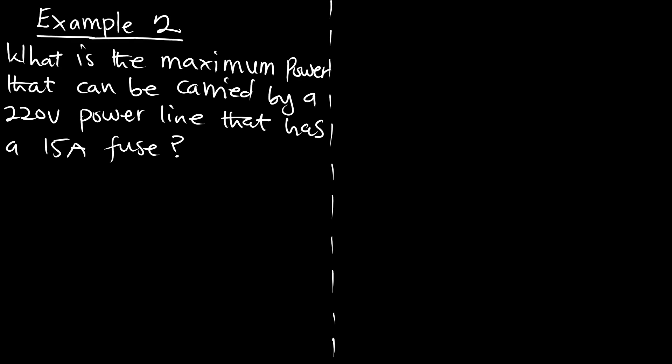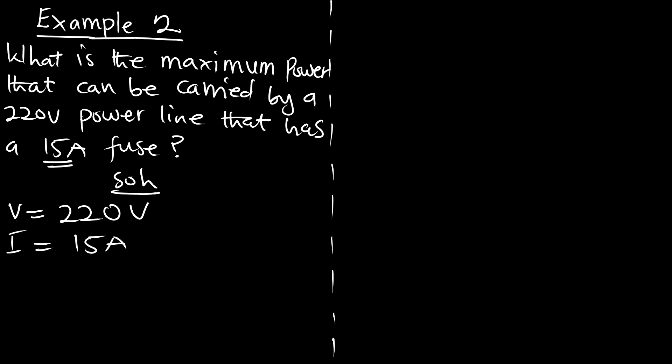Example two: what is the maximum power that can be carried by a 220-volt power line that has a 15-ampere fuse? We write down our parameters: voltage is 220 volts, the fuse gives us a maximum current I of 15 amperes, and we need to calculate for the maximum power P.